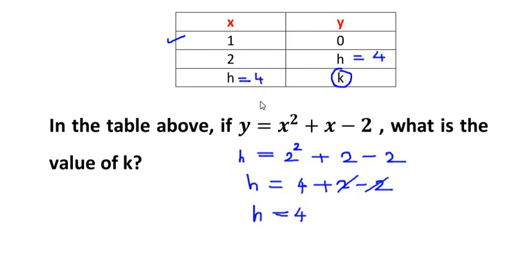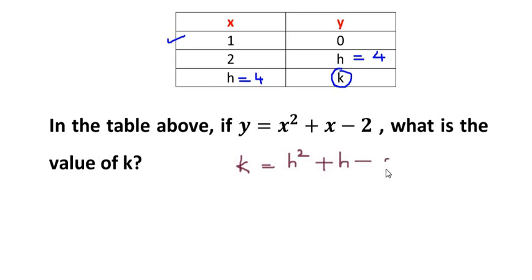So we saw that we got the h value as 4, and the same thing repeats over here, so this is also 4. Now in the question they have asked us to find the value of k. So using the same substitution method, we are going to use the function and substitute it. Now let us take y as k. Let's substitute the k over there, and in place of x we are going to substitute h. So it is h square plus h minus 2.